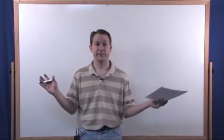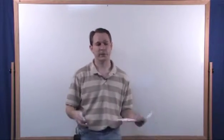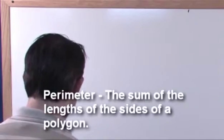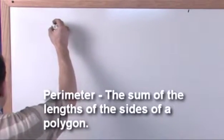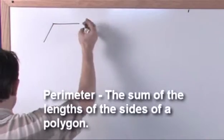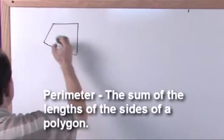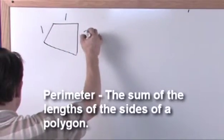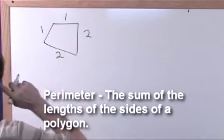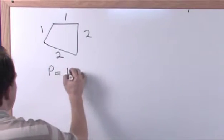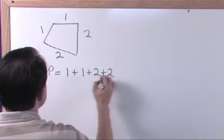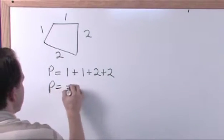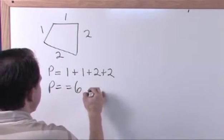So that's basically everything that this lesson is about and we're going to take that and apply it to some problems. The perimeter of a polygon is the total length of all the sides of the polygon. So if you have some shape like this, and this is one centimeter and one centimeter and two centimeters and two centimeters, then the perimeter is just going to be one plus one plus two plus two. So the perimeter is going to equal six centimeters.